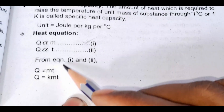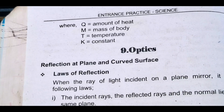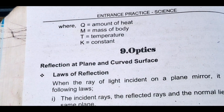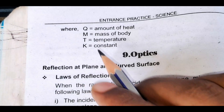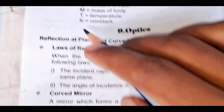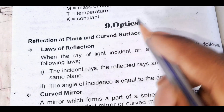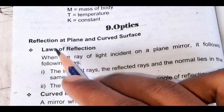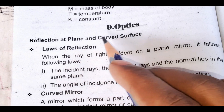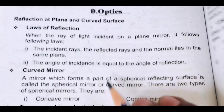The equation of heat can become very complex. Here, Q is equal to the amount of heat; M is equal to mass of body; temperature change; and a constant. Reflection at plane and curved surfaces, law of reflection, curved mirror.